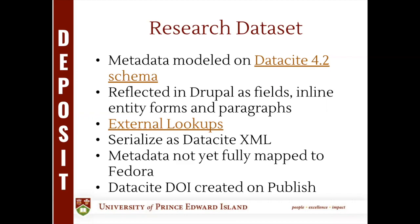We're also working on mapping that metadata to Fedora and determining the best path forward there. The importance of DOIs or identifiers in general within the framework can't be stressed enough. When we've got a unique, persistent identifier, that is helpful — people can cite the record, it can be shared in other ways, and it can be used as a query access point when doing other lookups.